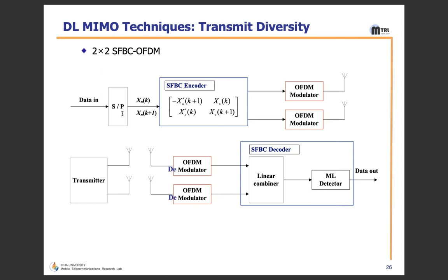After SFBC encoding, both streams are modulated, transmitted toward the UE, and at the receiver side the UE demodulates the received data. There is a linear combiner stage at the SFBC decoder, followed by a Maximum Likelihood detector that optimally detects the received signal based on least distance, and finally the data is recovered. In transmit diversity, there are two choices: time domain (Time Switching Transmit Diversity) where continuous symbols of all subcarriers are transmitted alternatively every millisecond from either antenna, or frequency domain (Frequency Switching Transmit Diversity) where symbols of adjacent subcarriers in the same OFDM symbol duration are transmitted alternatively.